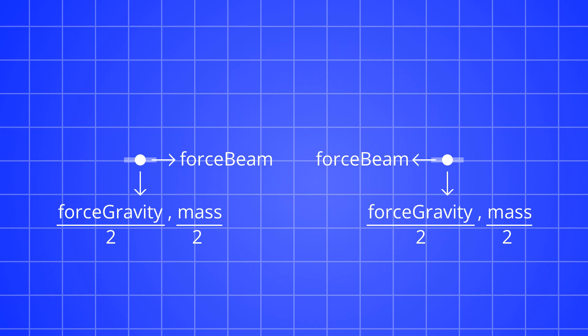To keep the simulation simple, we'll look at it from the perspective of the pins. Since there are two pins connected to each beam, each one will be responsible for half the beam's force of gravity, and half the beam's mass.